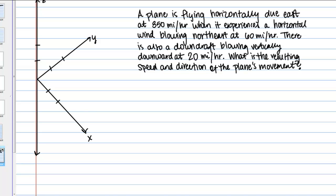A plane is flying horizontally due east at 350 miles per hour when it experiences a horizontal wind blowing northeast at 60 miles per hour. There is also a downdraft blowing vertically downward at 20 miles per hour. What is the resulting speed and direction of the plane's movement?